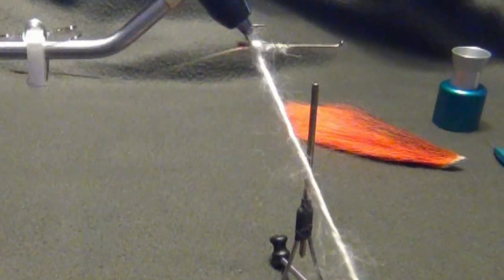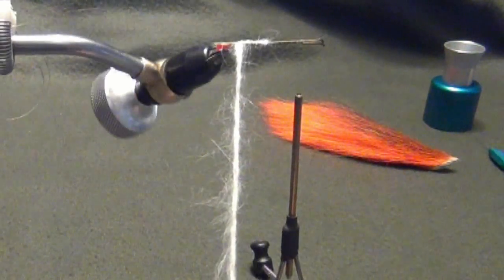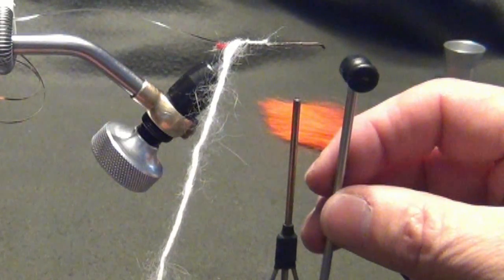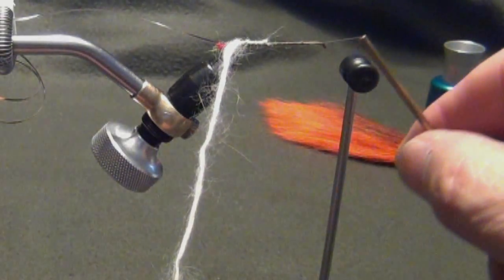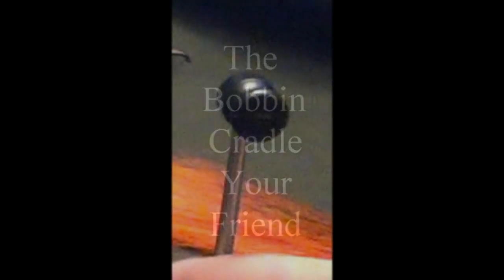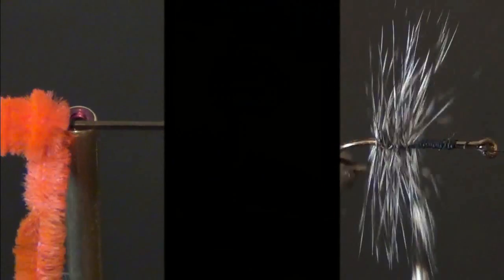So in summary, remember, the cradle head assembly is there to prevent thread buildup or the unwanted unwrapping of thread when you rotate the vise and the hook. If you use your rotary feature for the wrapping of ribs, body material, and hackle, the bobbin cradle is your friend.